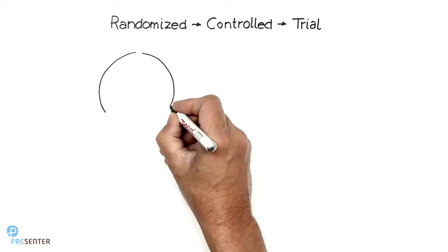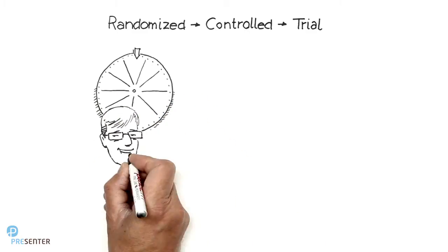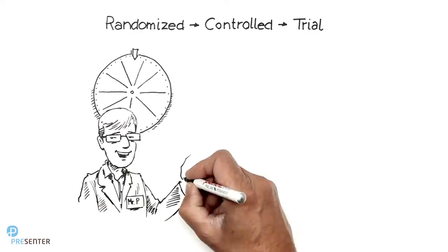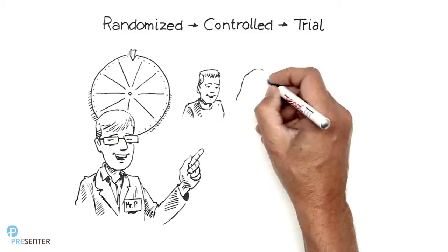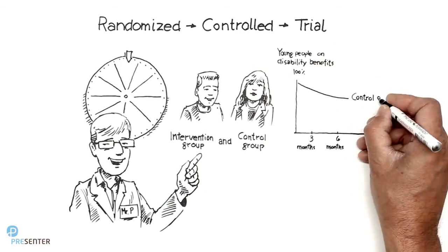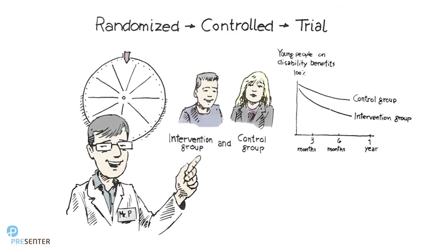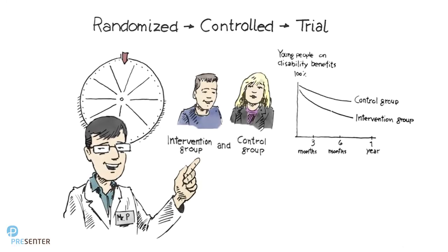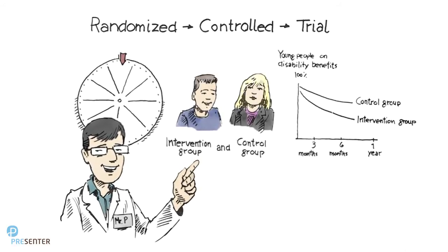Now we have seen how a randomized controlled trial works. RCTs may sound complicated, and it can be challenging to carry out the experiments correctly. Yet, as we've seen here, understanding the principles behind the method is not necessarily that difficult.